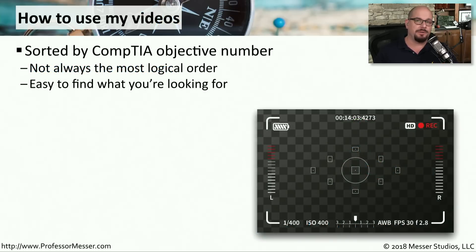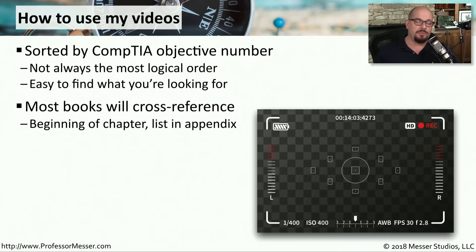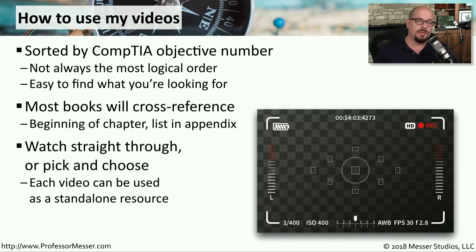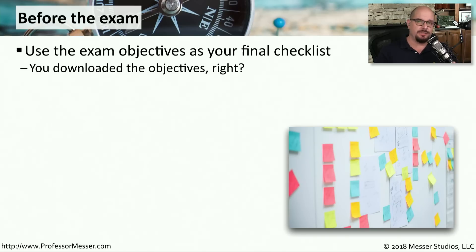As you use these videos and other training materials, topics may not be in the same order across resources. All of my videos follow the CompTIA exam objectives order, and most books will cross-reference against those objective numbers. So you can find the objective numbers for any chapter and cross-reference back to the corresponding videos. I also recommend referring back to the exam objectives before you walk into the exam — they make a great checklist and can tell you where to spend more time.